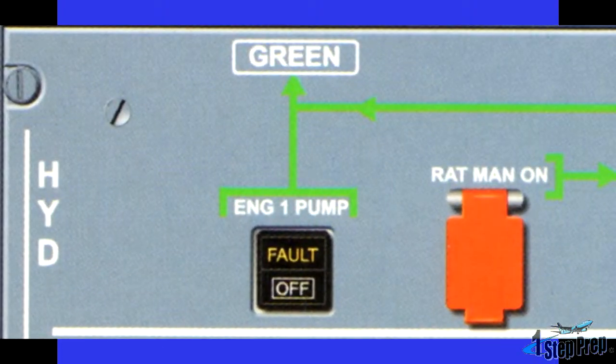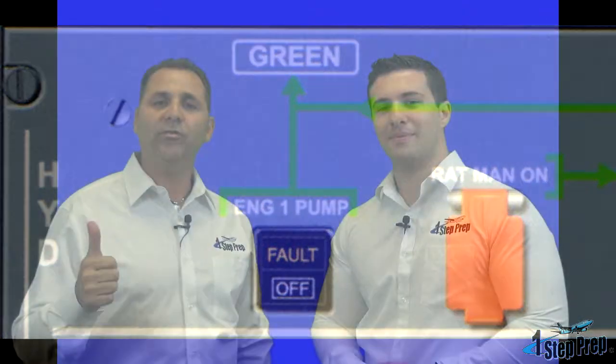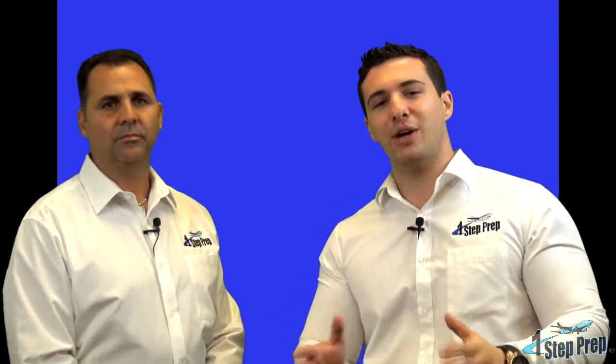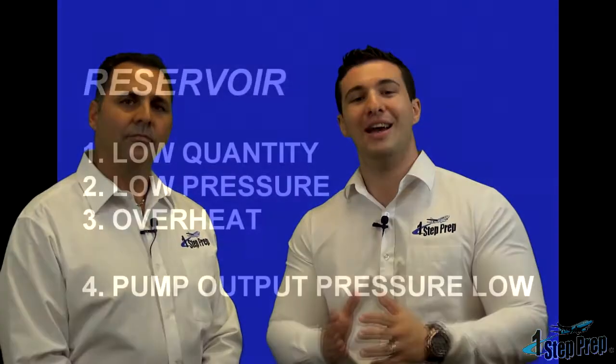With the engine-driven pump fault light — what does that amber fault light indicate? From the system review, if the engine-driven amber fault light comes on, the first three answers are going to be reservoir: reservoir low quantity, reservoir low pressure, or reservoir overheat. The last one will be pump output pressure low. Three of those responses have to do with the reservoir — low quantity, overheat, or pressure — and then the fourth is that the pump output pressure is low.